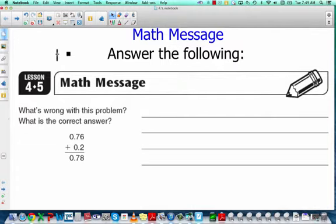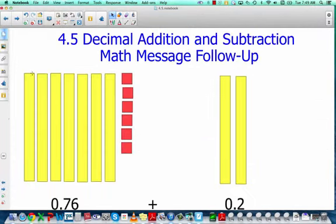Remember that 76 hundredths would look like this. One, two, three, four, five, six, seven tenths, and then six hundredths. So 76 hundredths.